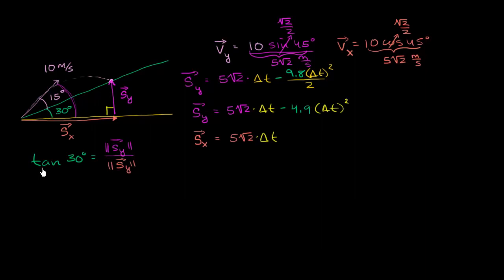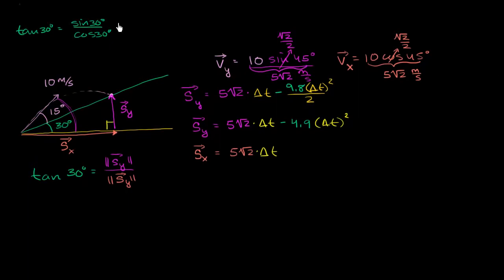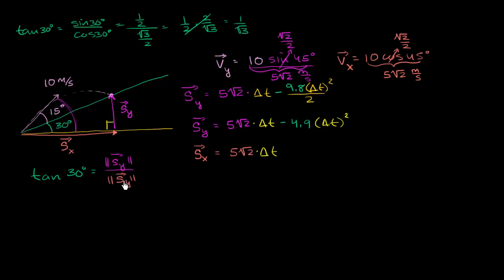The tangent of 30 degrees equals sine of 30° over cosine of 30° = (1/2) / (√3/2) = 1/√3. So the magnitude of our vertical component over the magnitude of our horizontal component equals 1/√3.